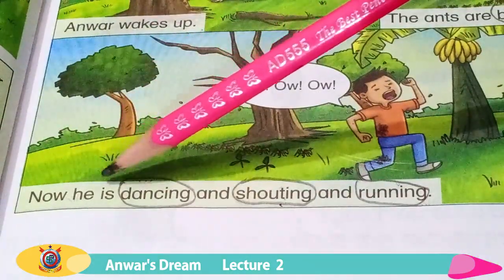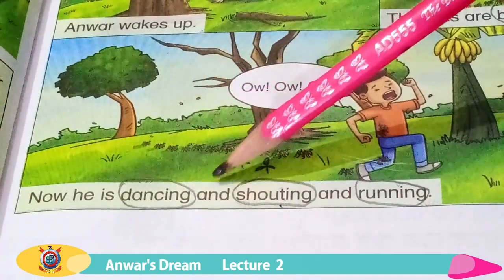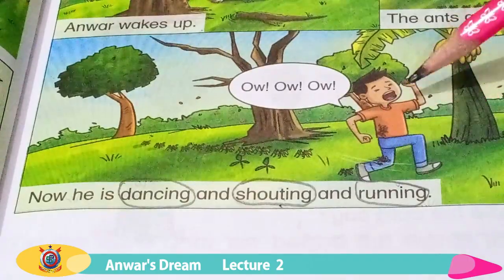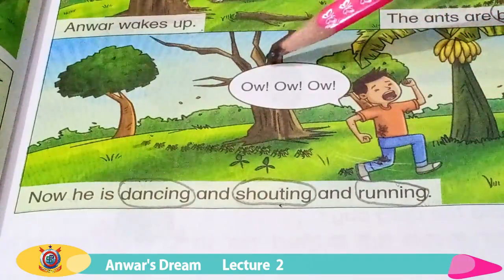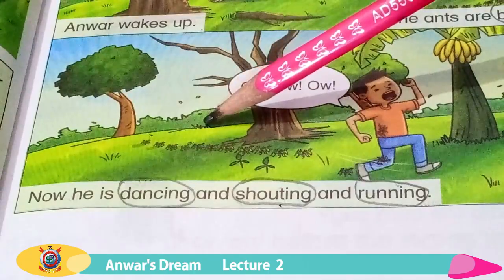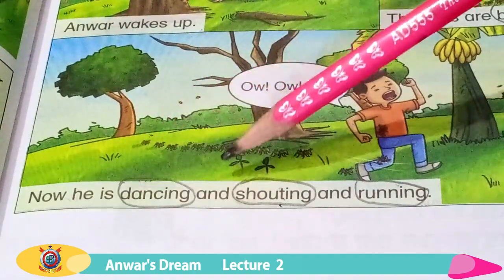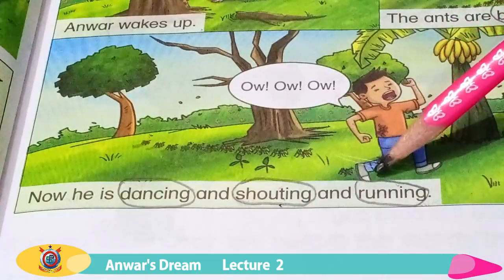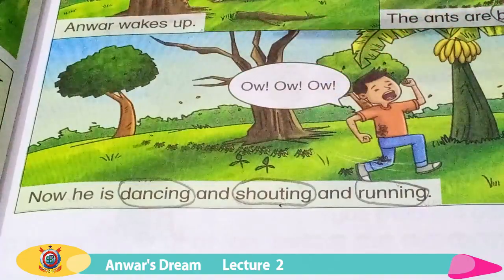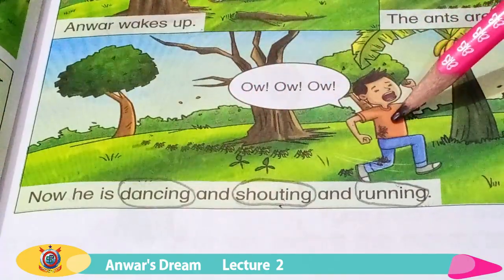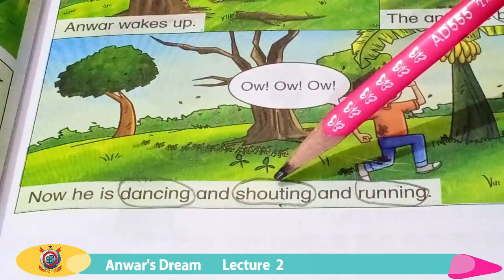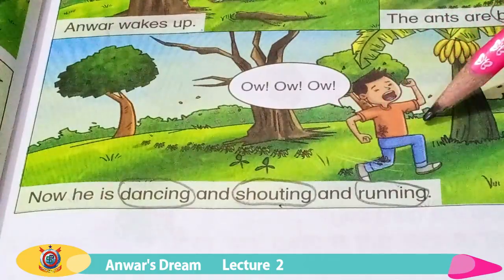Now he is dancing and shouting and running. What is Anwar doing here? Ants are biting Anwar, therefore he is dancing and shouting and running. Ants Anwar ko kaat rahi hain, is liye Anwar dancing kar raha hai. Can you see Anwar dancing? Yes — and shouting, aur woh chikh raha hai, and running, aur bhaag raha hai.